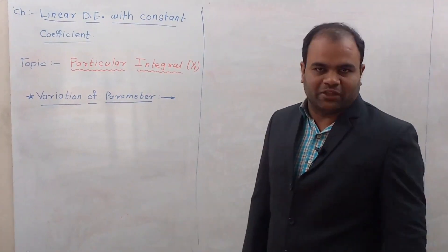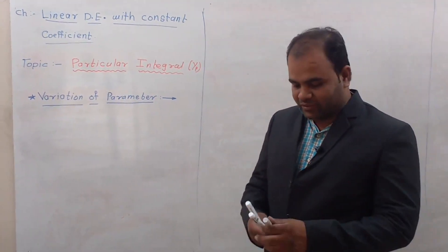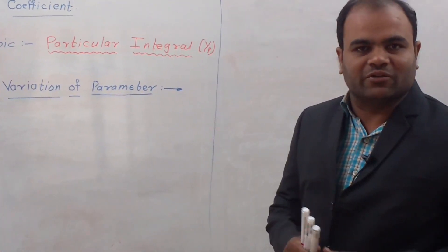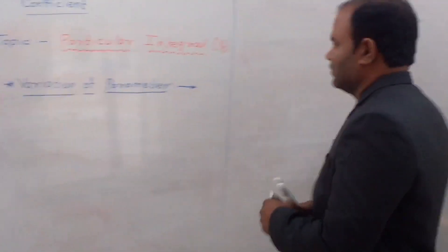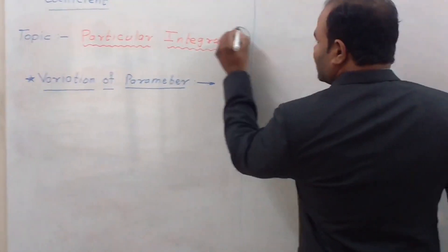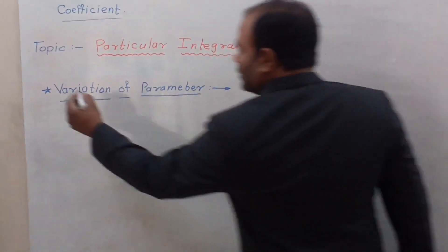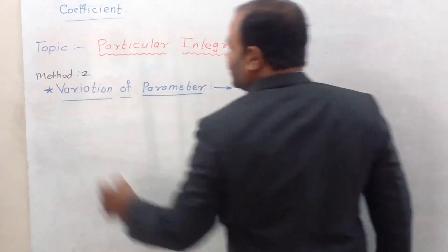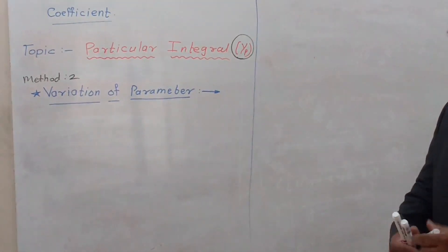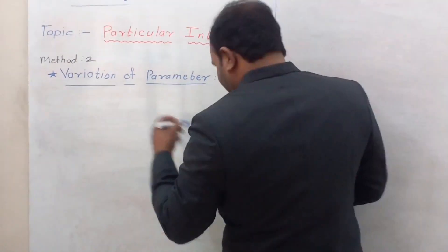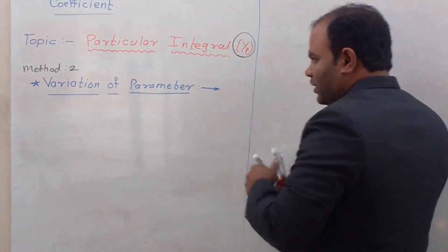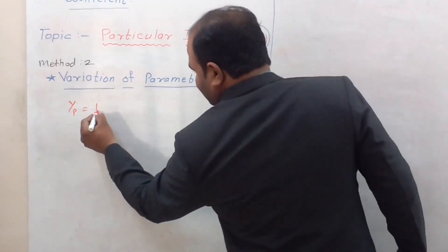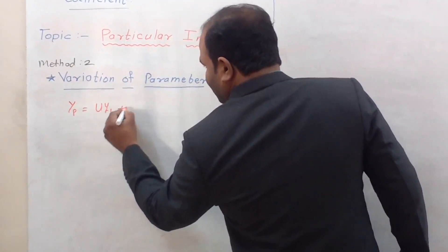This is a very different method compared with the first method. In this method there are some standard equations, and by using those standard equations we can find out the particular integral. So our aim is to find out this particular integral. This is Method 2 — Method 1 is the shortcut method and Method 2 is variation of parameter. According to variation of parameter, we have to find out the particular integral yp, and the equation of particular integral is u·y1 plus v·y2.